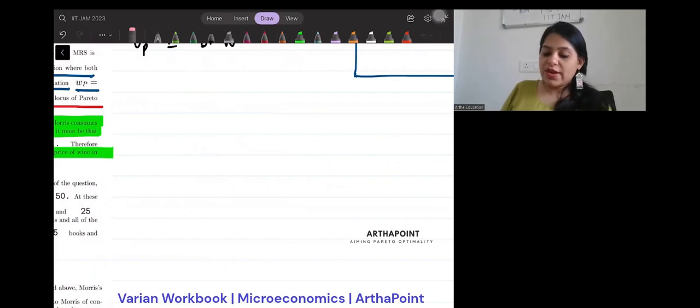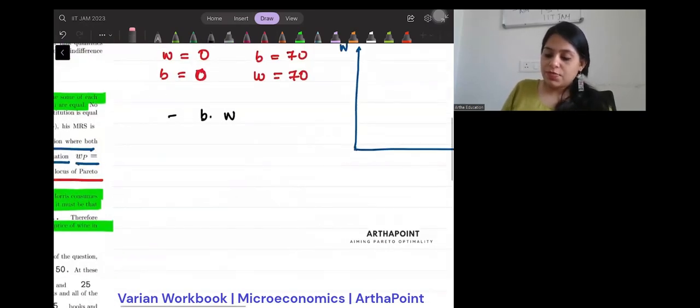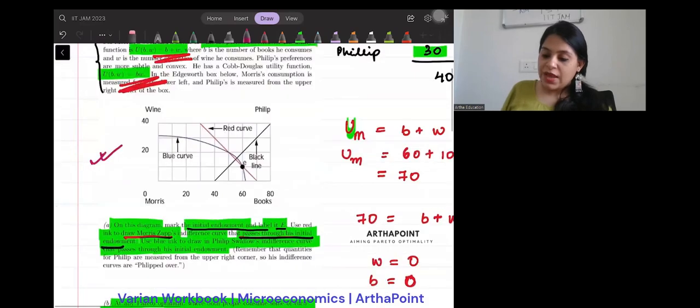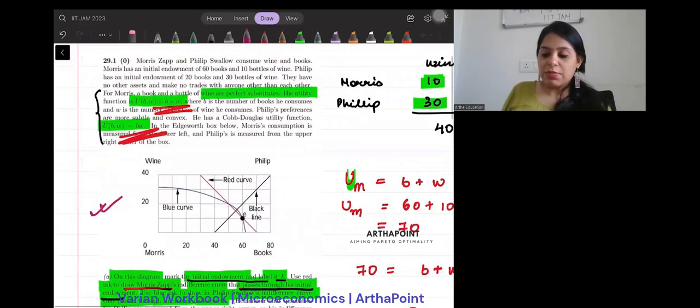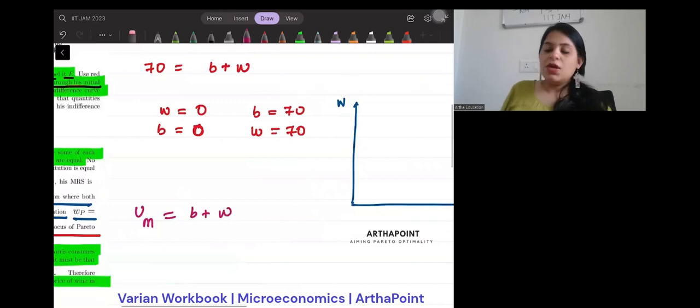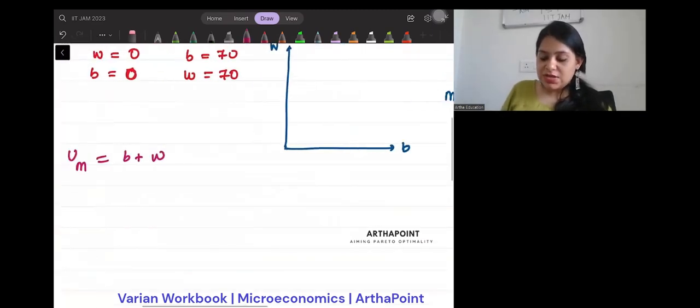So when I talk about the utility function of Morris, the utility function of Morris is given to me as b plus w, right? b plus w. Now just think about this. The MRS as we found out will be 1.